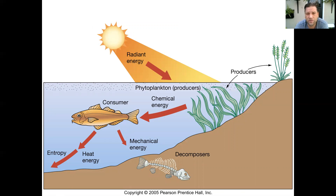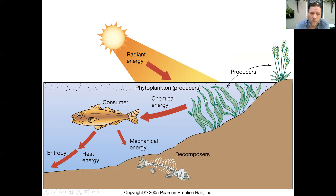We're going to continue to develop a couple of different terms. We've talked about producers already and we've talked about plankton. When the plankton is doing photosynthesis, they're called phytoplankton. That energy is stored in the leaves and then gets passed along. Organisms that eat producers are called consumers. And then once they begin to die, those organisms decompose — just a little bit about the cycle of life in the ocean.